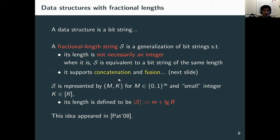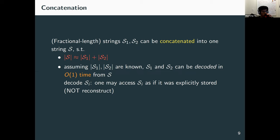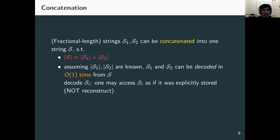There are two operations on fractional-length strings: concatenation and fusion. Concatenation generalizes the standard bit-string concatenation. Given two strings S1 and S2, they can be concatenated into one single string whose length is roughly equal to the sum of the two input lengths. Given the concatenated string and knowing the two lengths, we can decode each of S1 and S2 in constant time — meaning we can access either string as if it were explicitly stored. This generalizes to b strings S1 through S_b, all concatenated with total length equal to the sum of individual lengths.